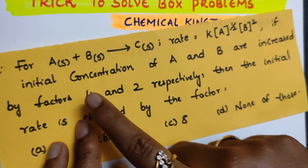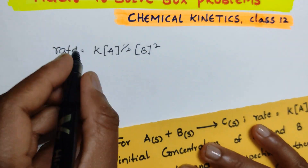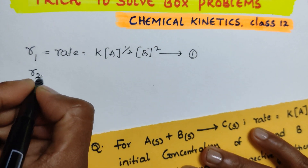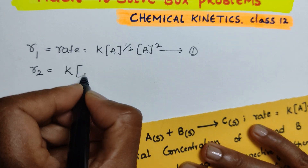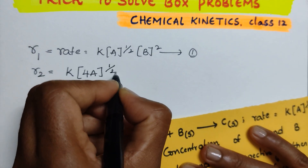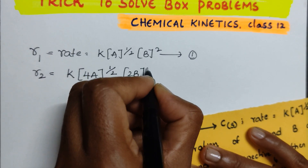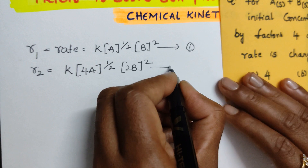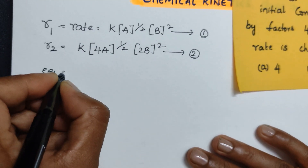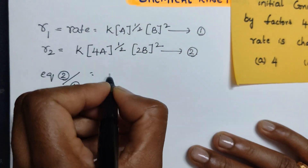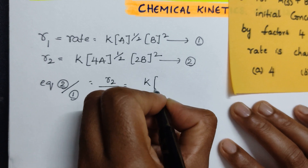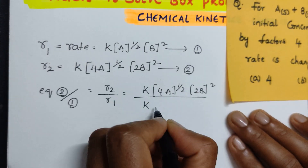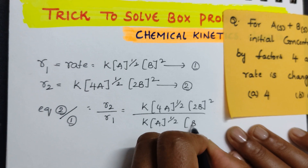What you have to do is take the rate expression as r1, call it equation 1. Then write r2 = k[4A]^(1/2)[2B]^2, because A concentration is increased 4 times and B is increased 2 times as given in the question. This is equation 2. Now take equation 2 divided by equation 1.